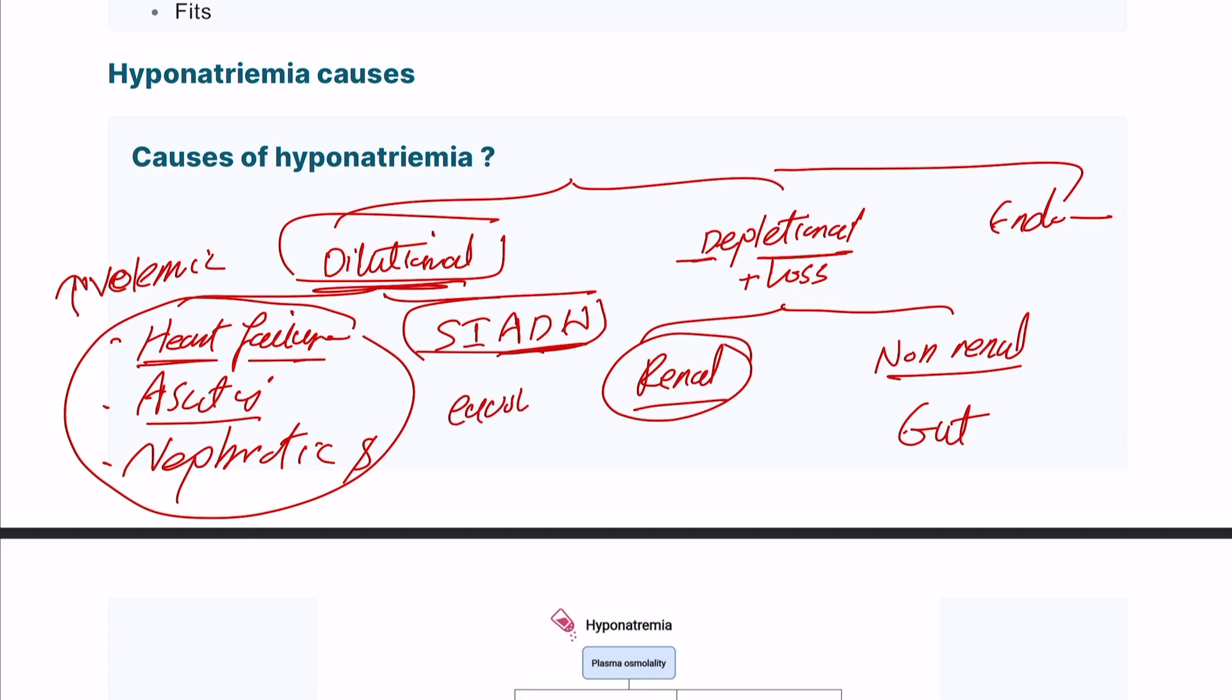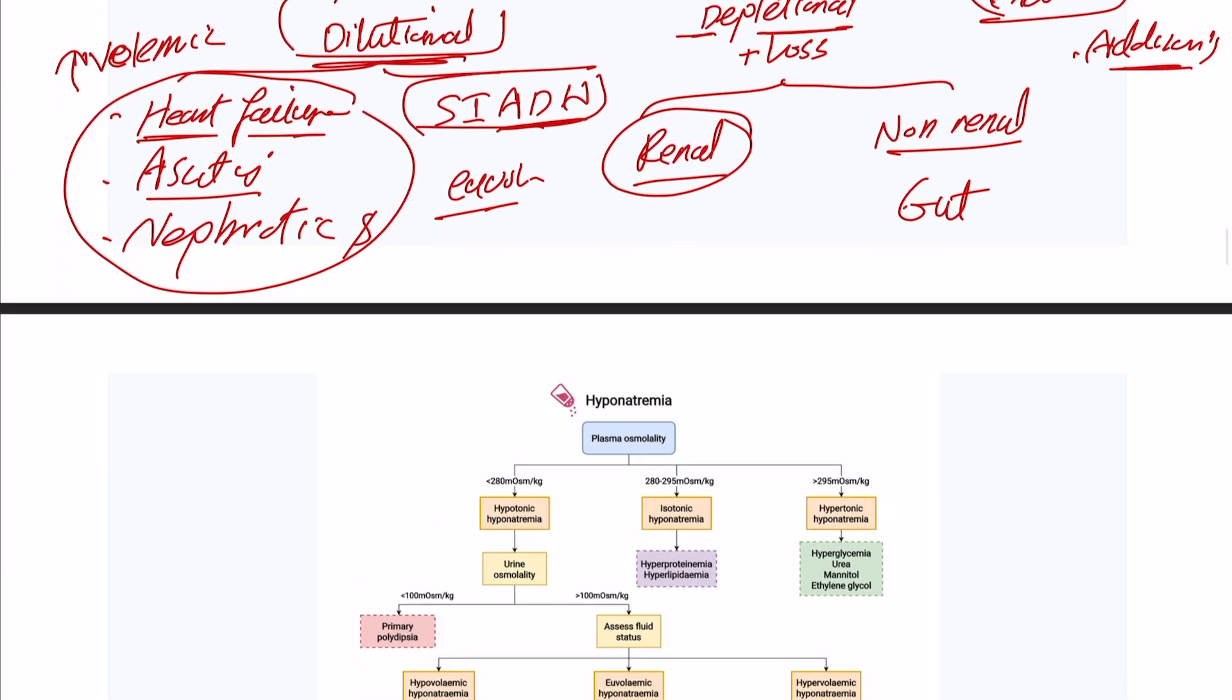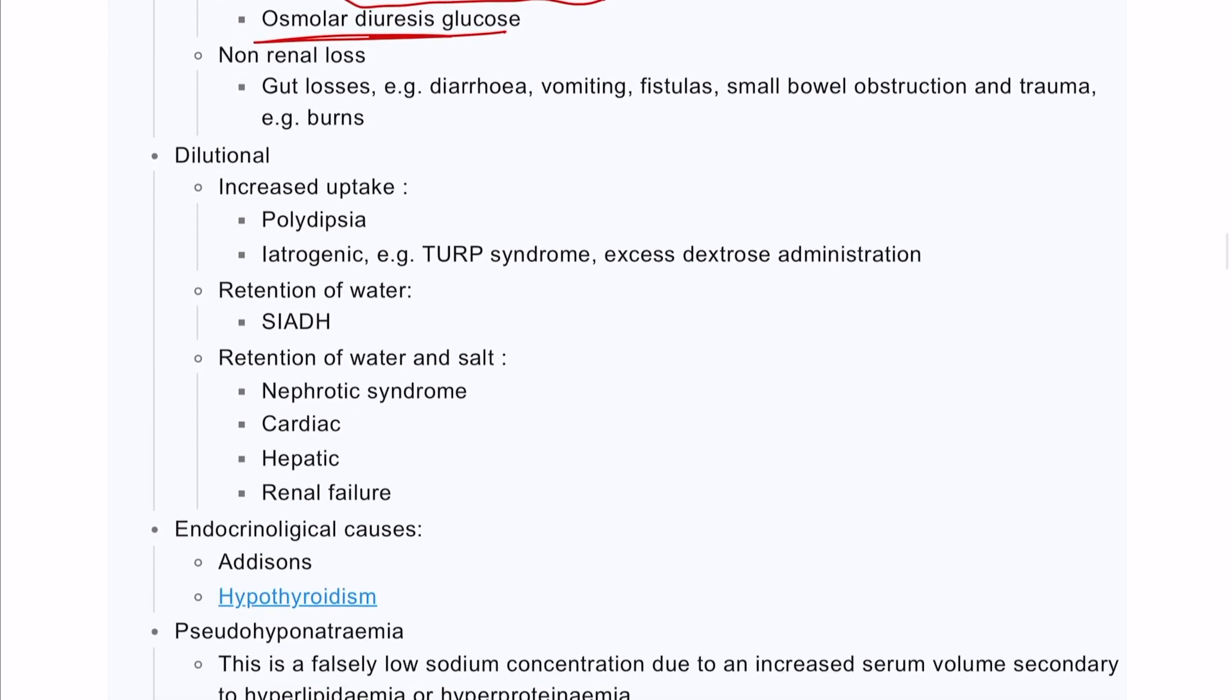The reason I'm classifying them this way: heart failure, ascites, and nephrotic syndrome will be hypervolemic hyponatremia, while SIADH will be euvolemic hyponatremia with the same amount of blood volume. We have endocrinological causes including Addison's disease, hypothyroidism, and even hyperthyroidism.